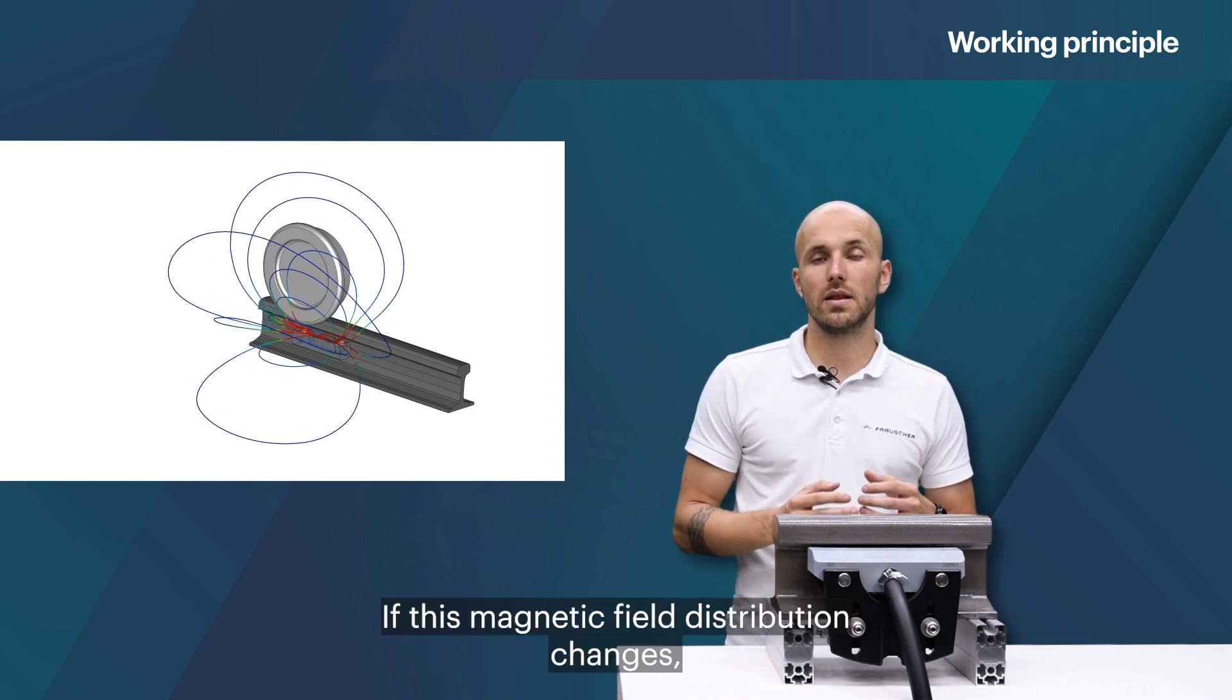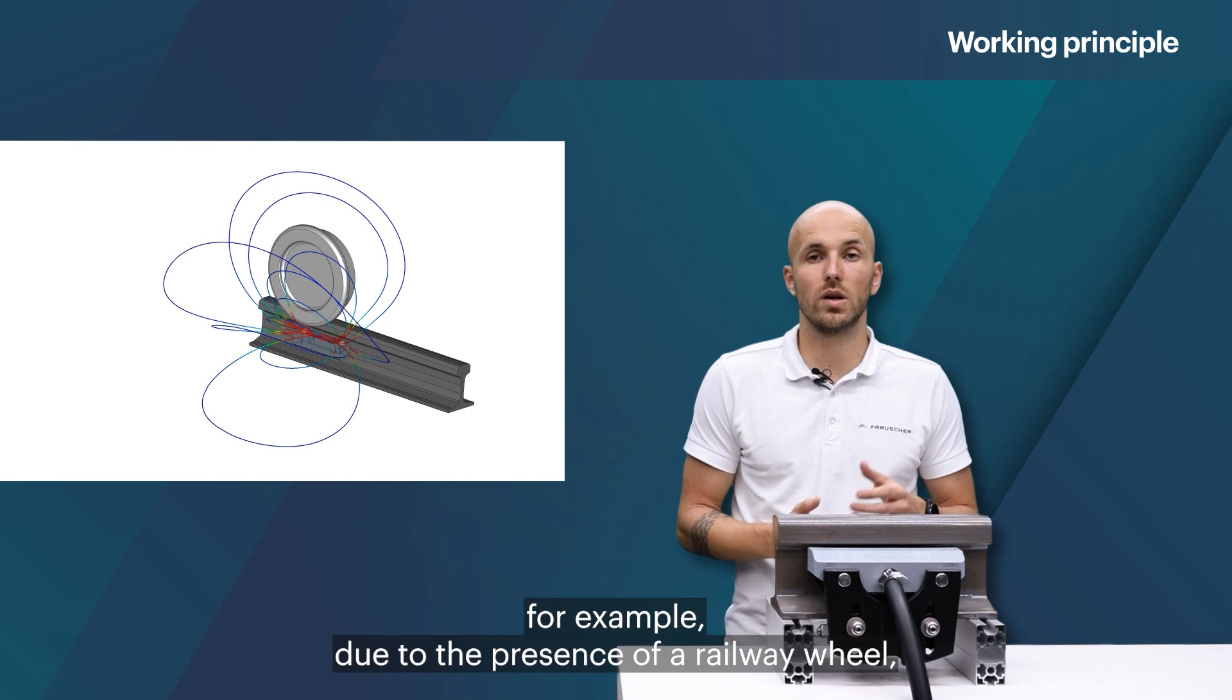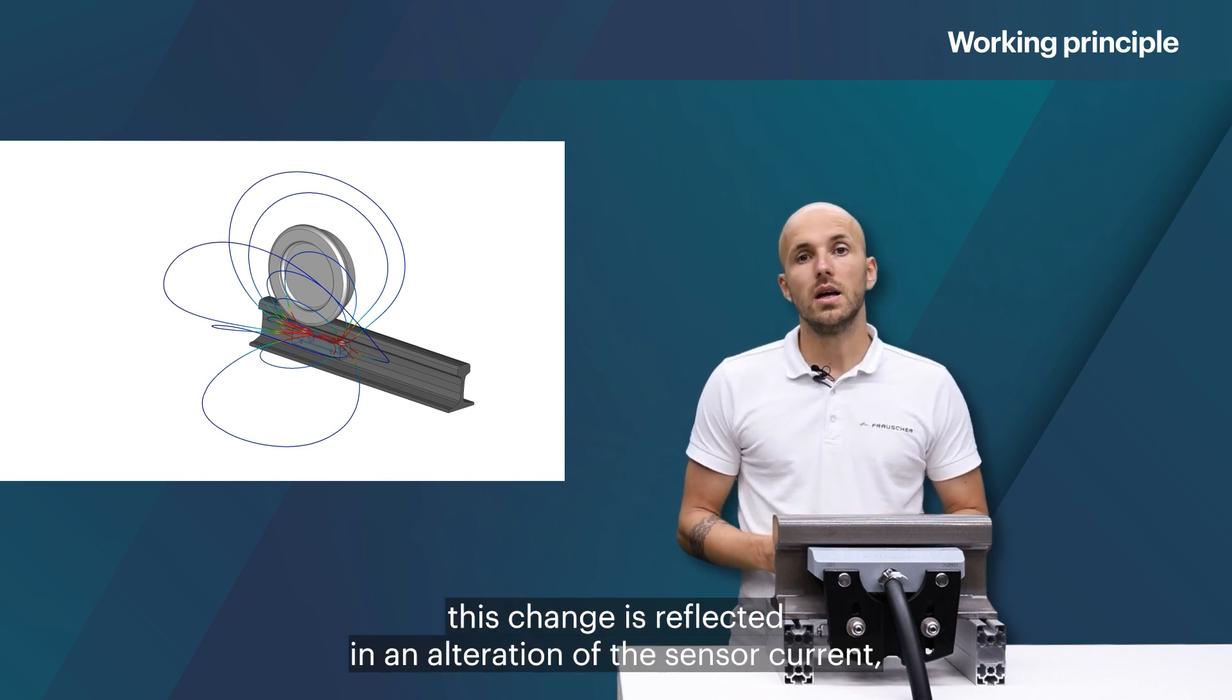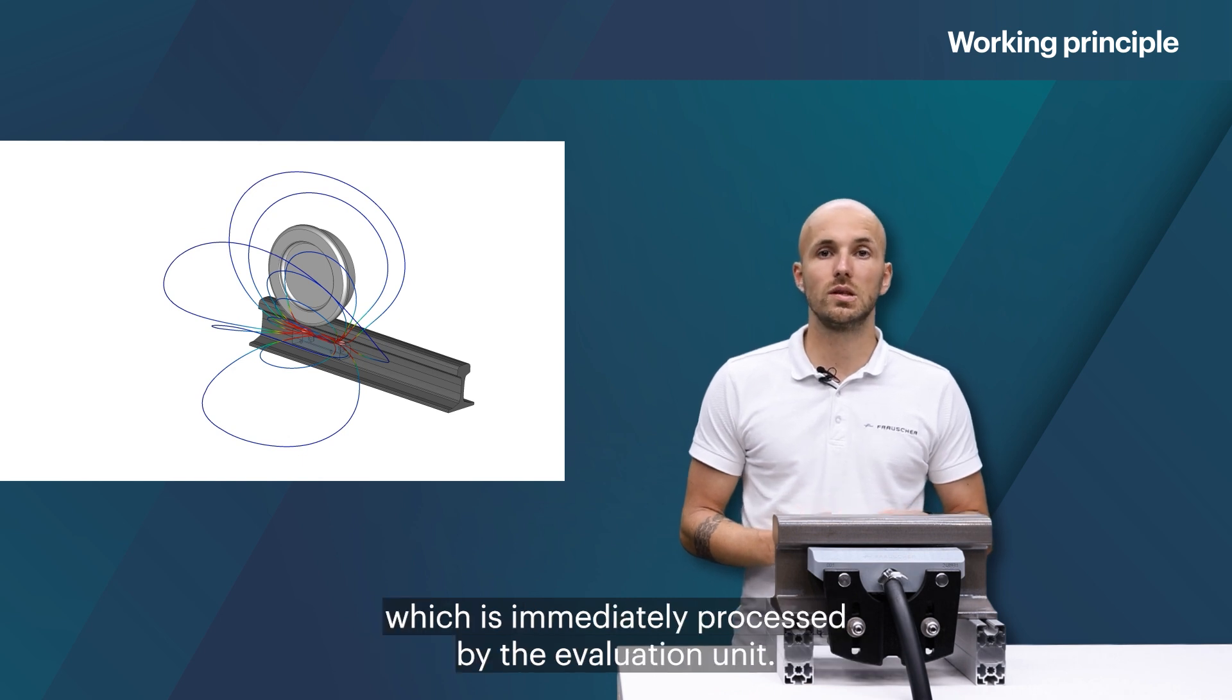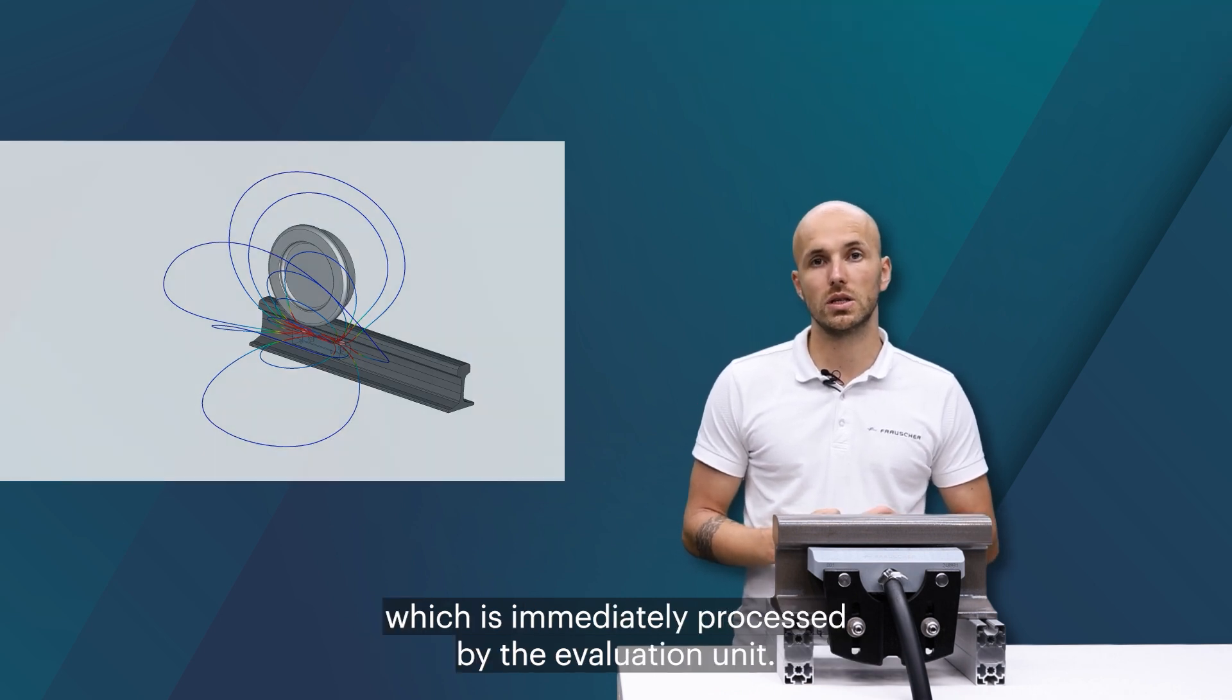If this magnetic field distribution changes, for example due to the presence of a railway wheel, this change is reflected in an alteration of the sensor current which is immediately processed by the evaluation unit.